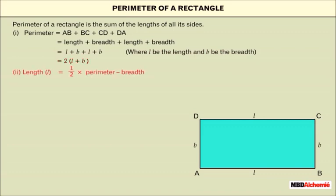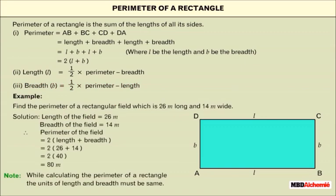Length L is equal to the half of the perimeter minus breadth. Breadth B is equal to the half of the perimeter minus length. For example,